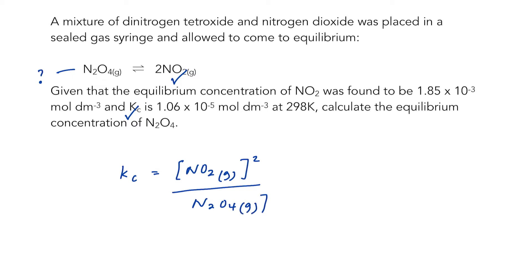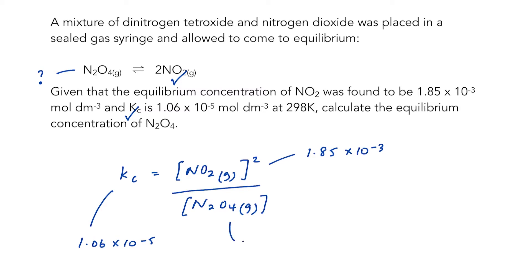We know that this is 1.85 times 10 to the minus 3, and obviously that's going to be squared. And we know that Kc is 1.06 times 10 to the minus 5, and N2O4 is our unknown concentration, so we're going to call it x.